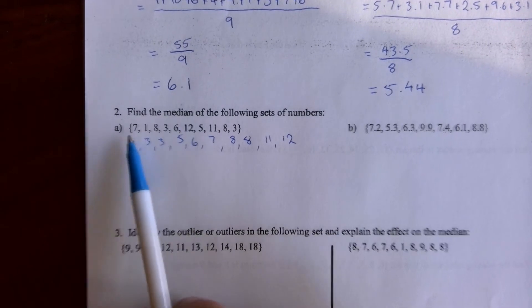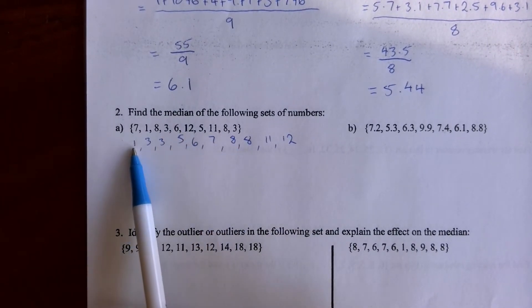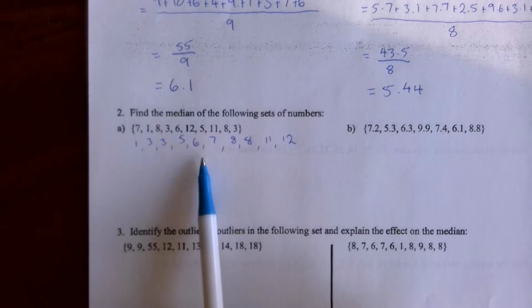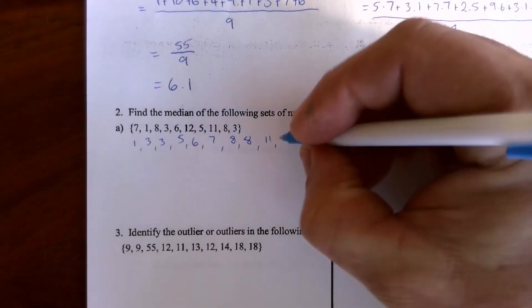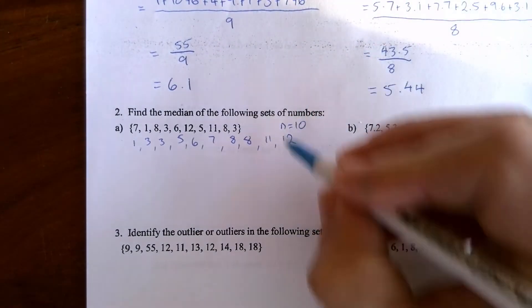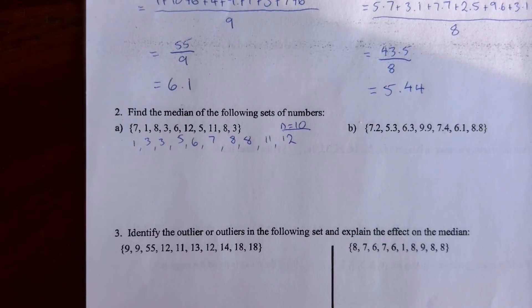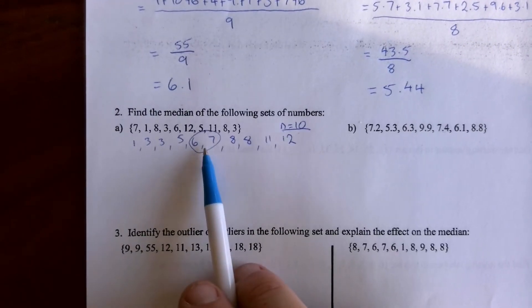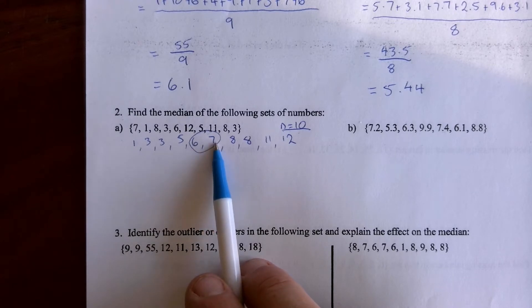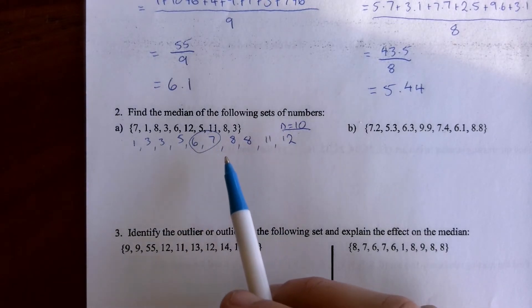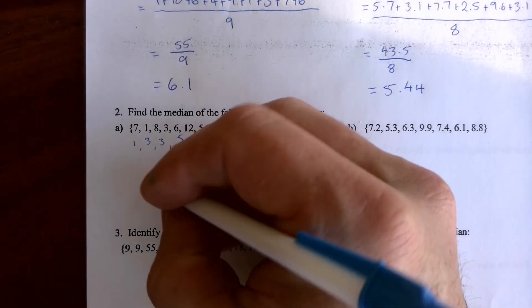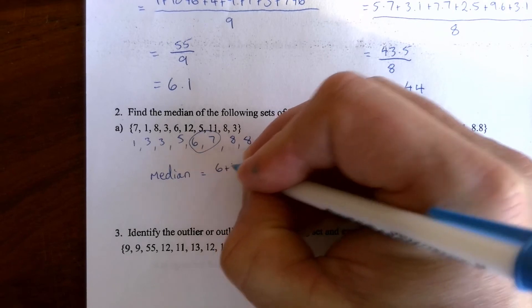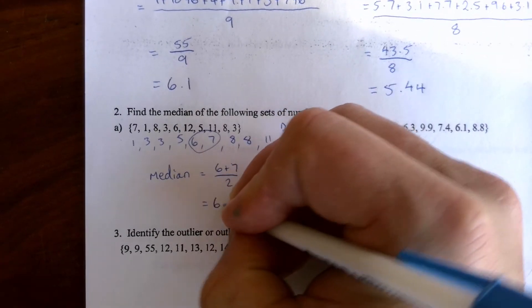Question 2a asks us to find the median. First, write the scores in order from smallest to largest — that's already done. There are 10 scores, which is an even number, so we look for the fifth and sixth scores — the middle two. Since you can only have one median, find halfway between them. Add those two scores and divide by two, giving a median of 6.5.